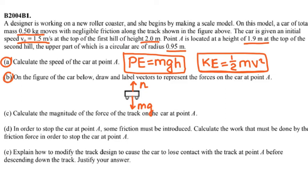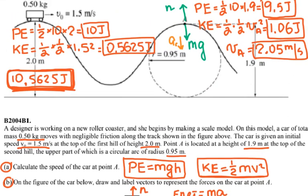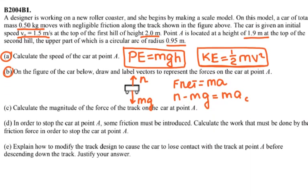For part C, they ask you to calculate the magnitude of the force on the car at point A. The F net equals ma. The net force is normal minus mg. When you write ma, in this case it's ma_c. If you look at the top, a_c is directed downward, so that is negative. And mg is also directed downward, so that's also negative.